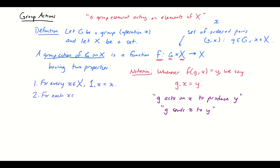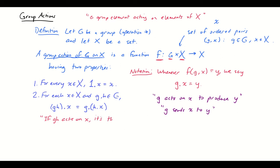Property two is a little trickier. For each x belonging to the set and g, h belonging to the group, (g★h) acting on x produces the same thing as g acting on the result of h acting on x. In other words, if gh acts on x, it's the same as h acting on x followed by g — an idea reminiscent of function composition.